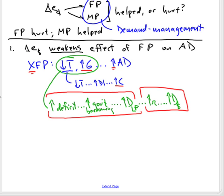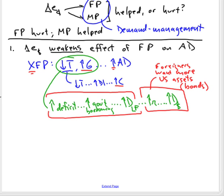Expansionary fiscal policy, by increasing the deficit, will increase the demand for loanable funds. The higher interest rate produced by the higher demand for loanable funds will drive up demand for dollars — because foreigners are more interested in owning bonds, savings accounts, and other American financial assets. The increase in demand for dollars, all other things being equal, will drive up the exchange value of the dollar.